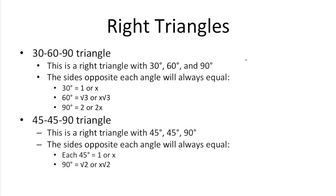So 30, 60, 90 triangles and 45, 45, 90 triangles are two special types of right triangles.